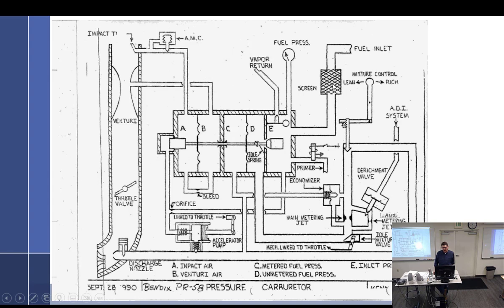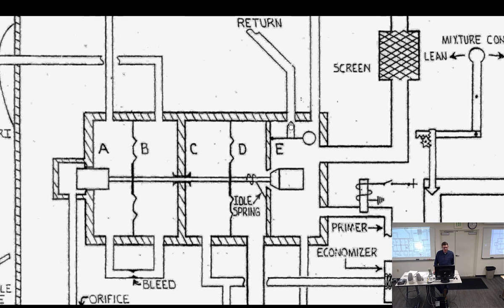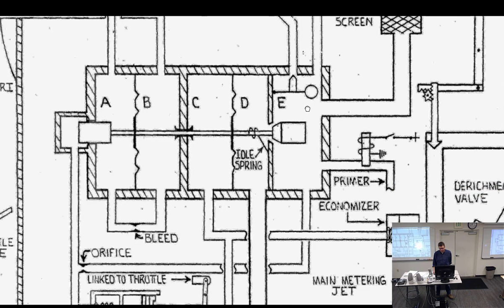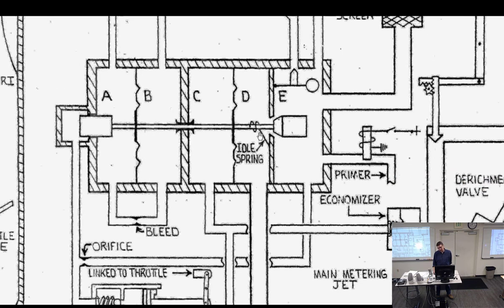Fuel comes in the fuel inlet past the screen and goes into chamber E — about 9 to 14 psi. This also has a vapor return with a little float and pin. It's normally closed because fuel fills it up and the float rises, blocking the return. If bubbles come in, the fuel level drops, the float burps the air out, and it fills back full of fuel.